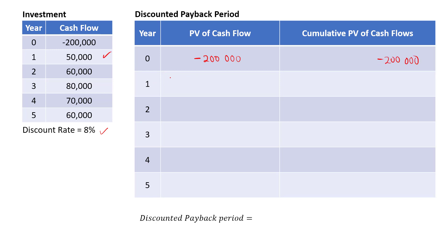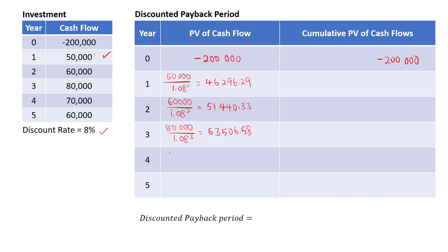For year one, we take $50,000 divided by 1.08 to the power of one, which gives $46,296.29. For year two, $60,000 divided by 1.08 squared gives $51,440.33. For year three, $80,000 divided by 1.08 to the power of three gives $63,506.58. For year four, $70,000 divided by 1.08 to the power of four gives $51,452.09. For year five, $60,000 divided by 1.08 to the power of five gives $40,834.99.